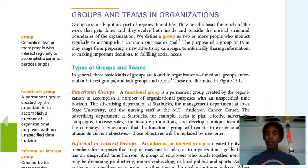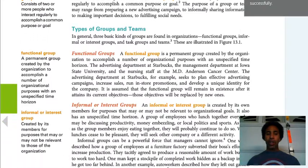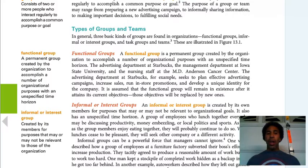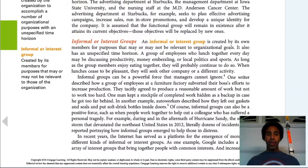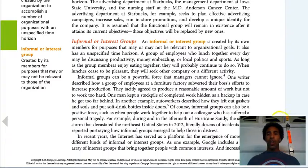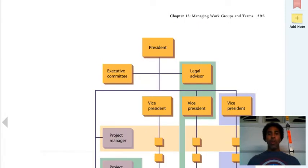You can have a functional group — a permanent group created by the organization to accomplish a number of organizational purposes within an unspecified time horizon. The company initiated and formed this group, as opposed to individuals forming an informal group, like when all the smokers go out for a smoke break at 9:45. An informal or interest group is created by its members for purposes that may or may not be relative to those of the organization. Obviously, smoking is not relative to the needs of the organization, and neither is a softball team. But those informal groups can be created.